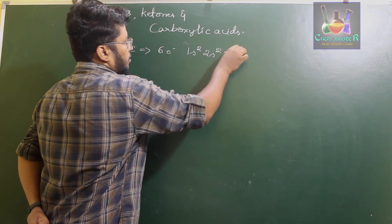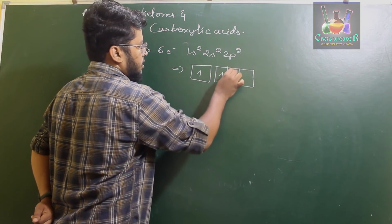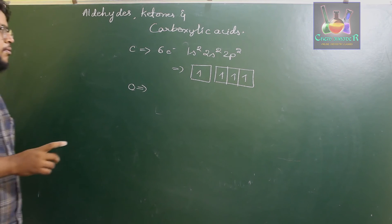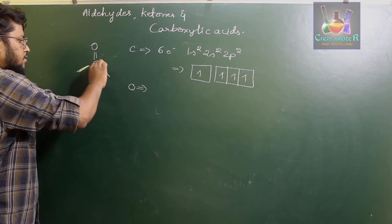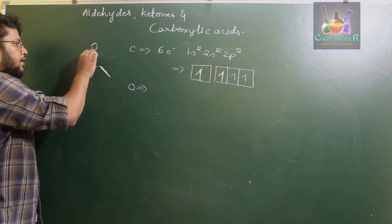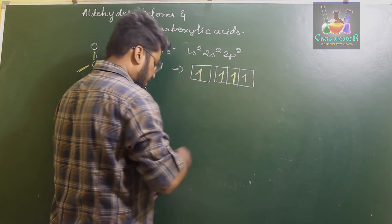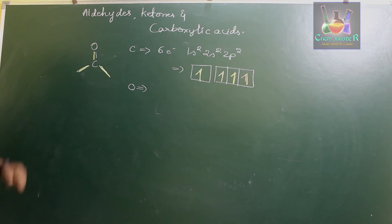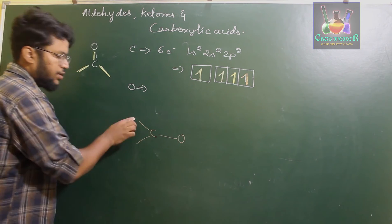Carbon gets excited to form a configuration with one electron each in the 2s and 2p orbitals, forming four bonds. When it overlaps with oxygen, two of the bonds of the carbonyl group arise from the overlapping of electrons with different atoms, and one bond arises from the overlapping of the electron in the p orbital. This gives one unpaired electron at the p orbital — the pz orbital — which lies perpendicular to the plane.